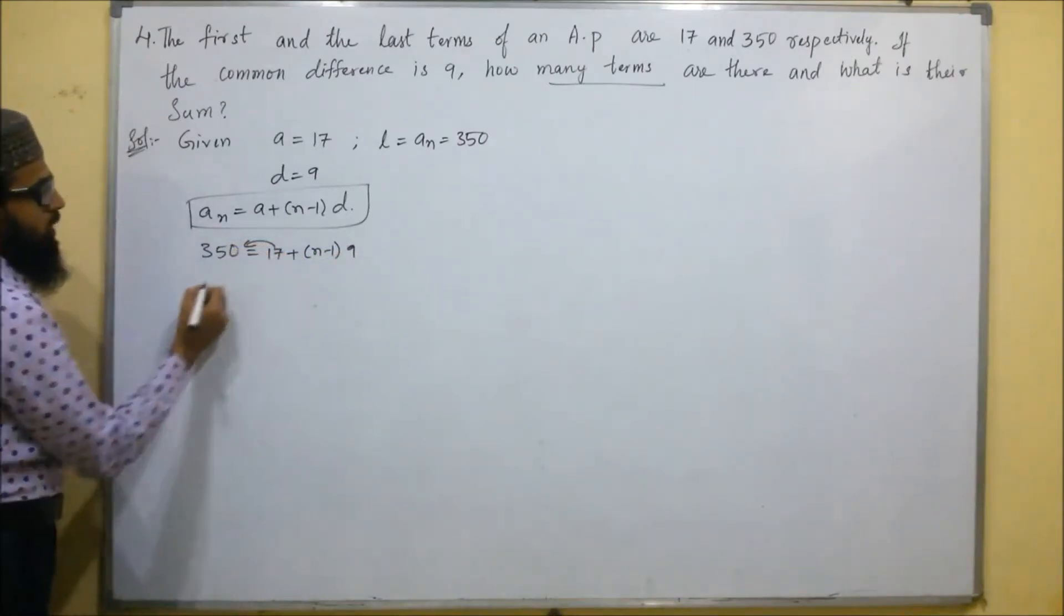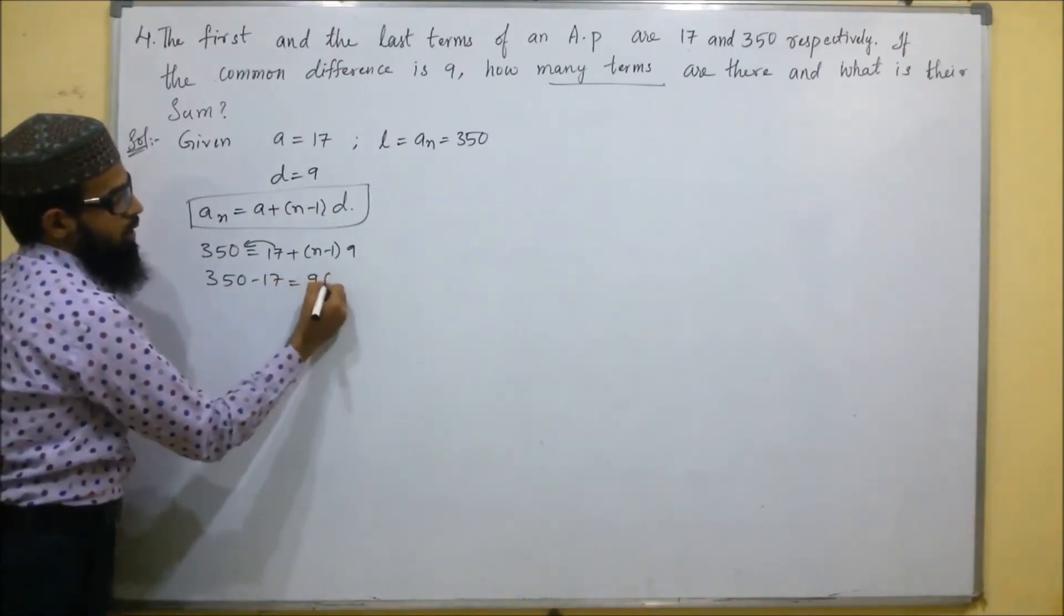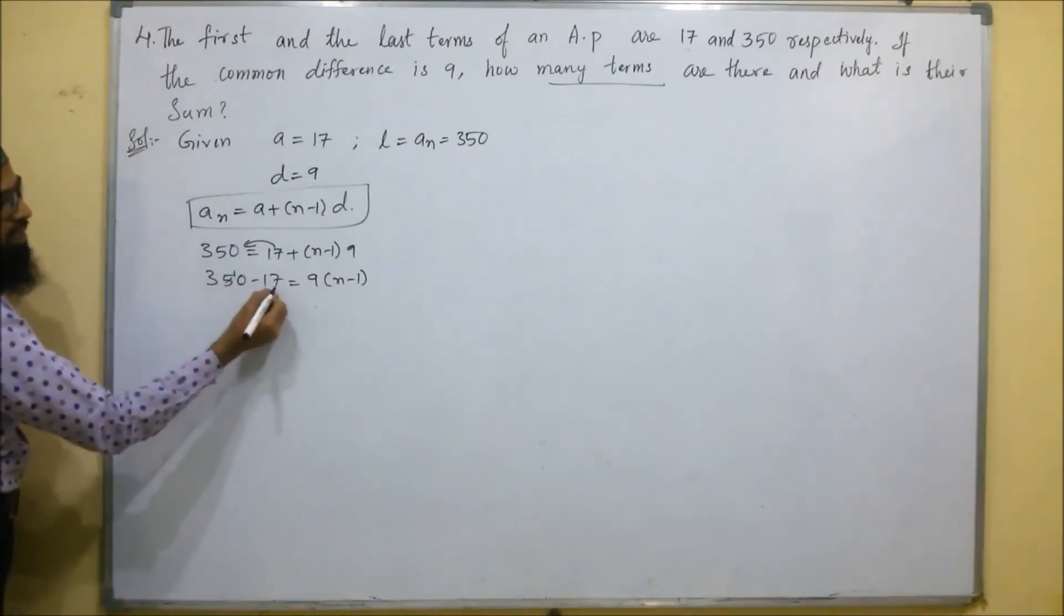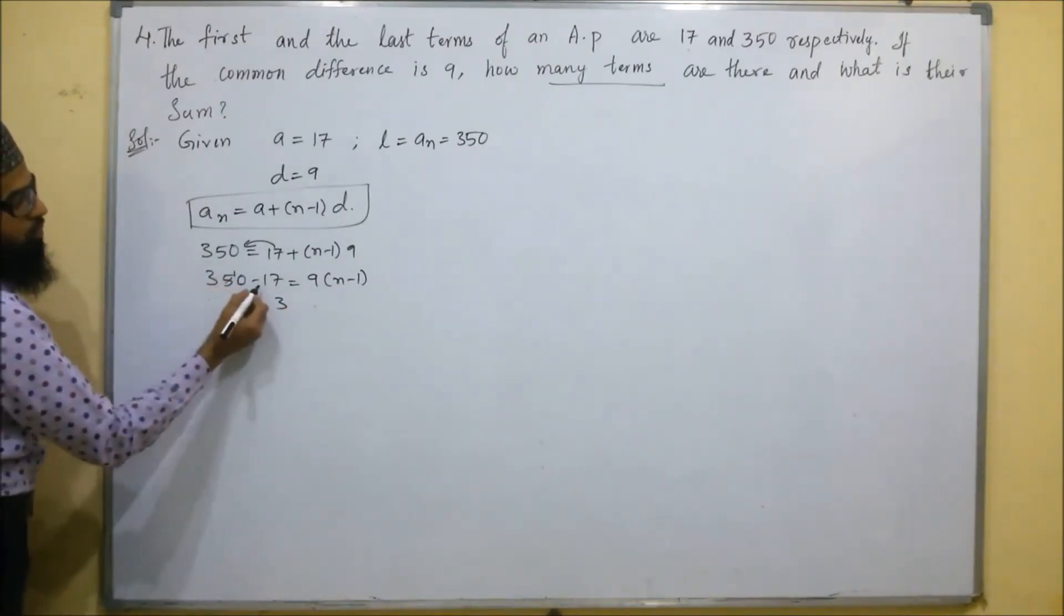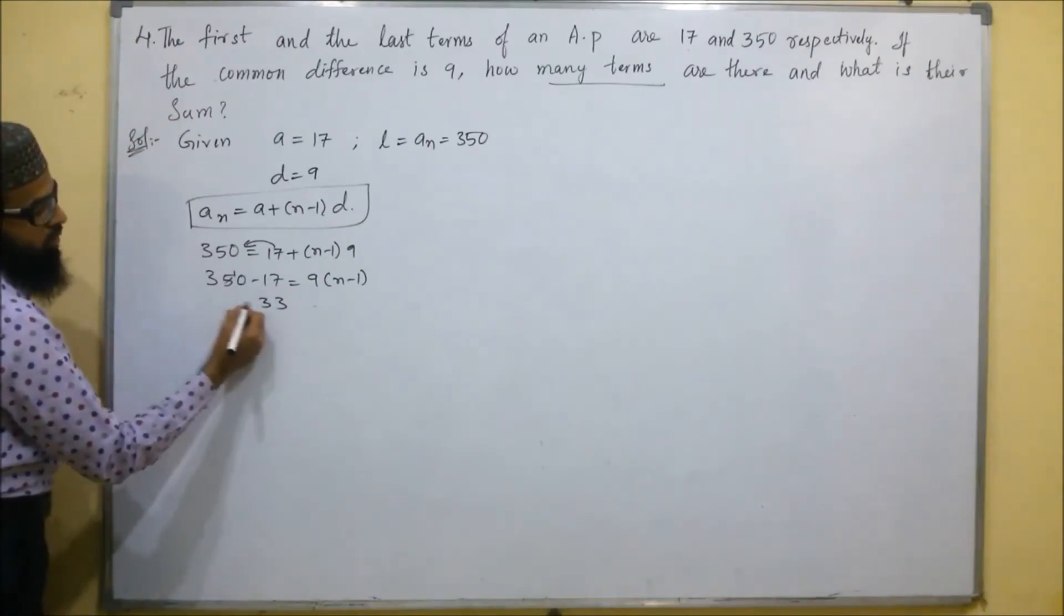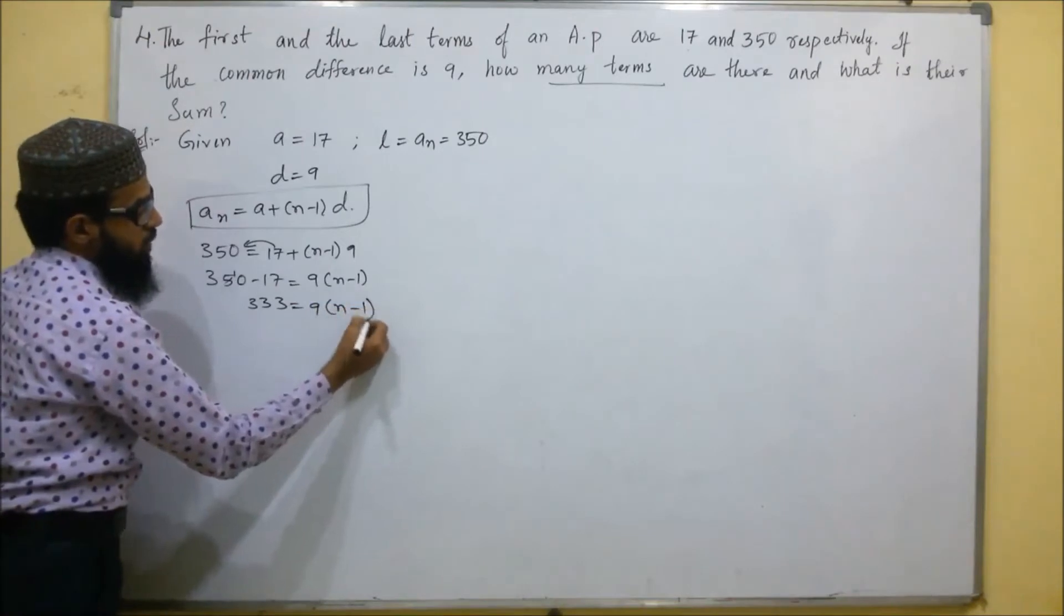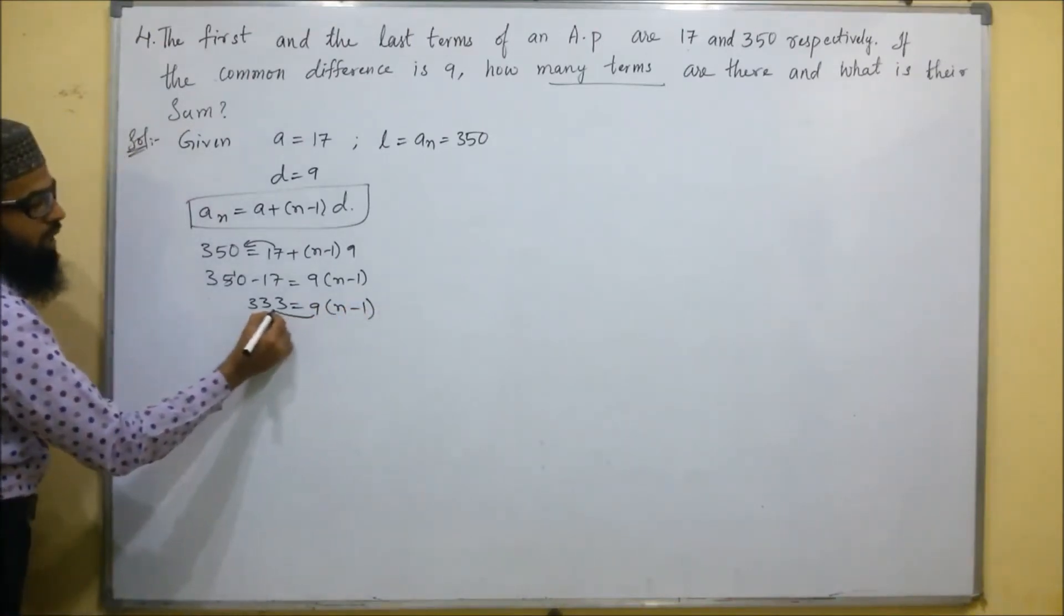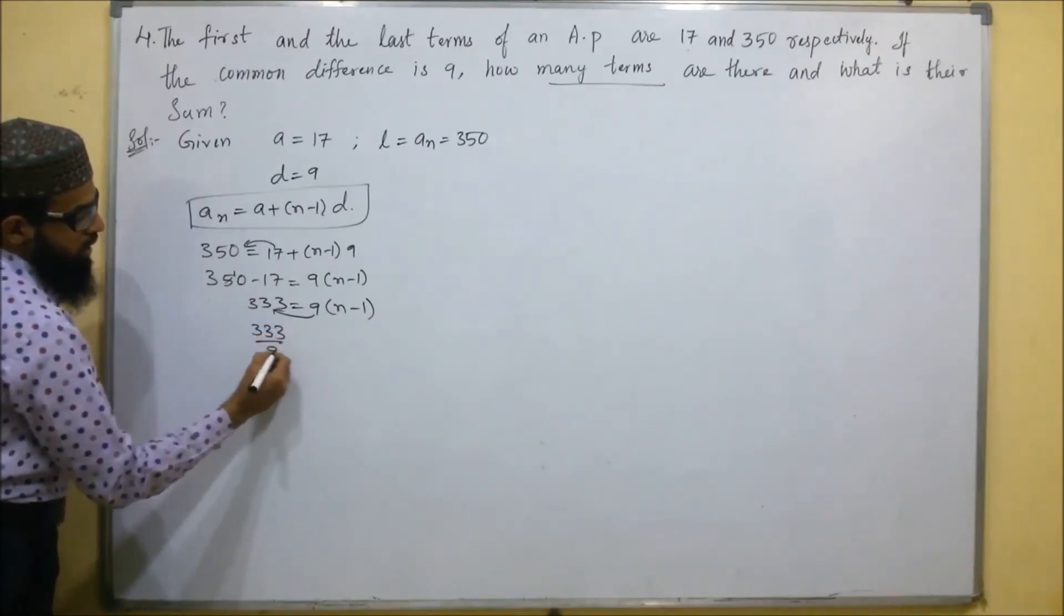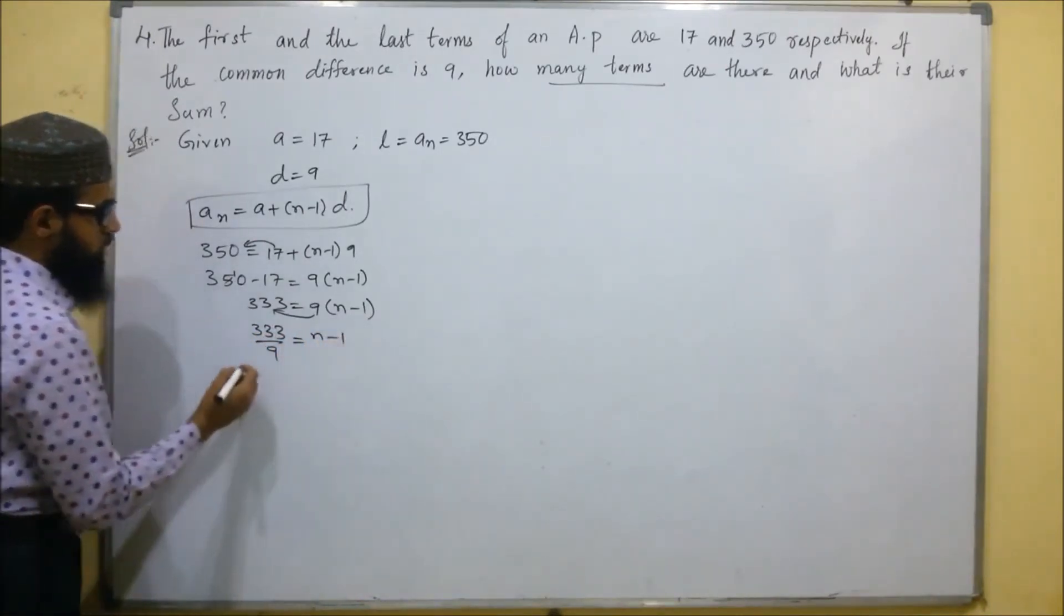17 goes to that side. 350 minus 17 equals 9 into N minus 1. If we subtract, 10 minus 7 will be 3 and 4 minus 1 is 3. So, 333 equals 9 into N minus 1. 9 comes down, so divided by 9 equals N minus 1.